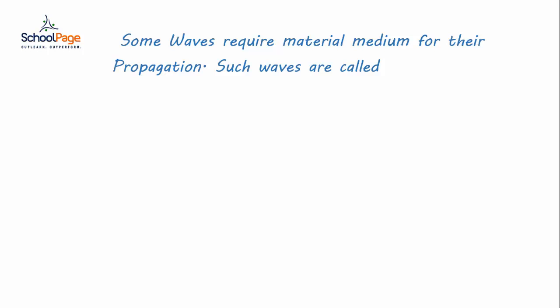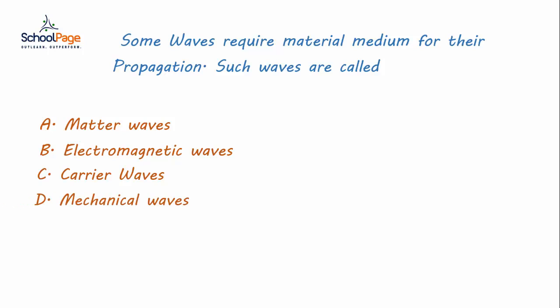Such waves are called: Option A - matter waves, Option B - electromagnetic waves, Option C - carrier waves, and Option D - mechanical waves.